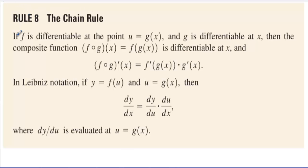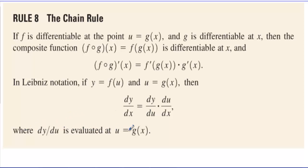Rule 8, the chain rule: If f is differentiable at the point u equals g of x, and g is differentiable at x, then the composite function f of g of x is differentiable at x. The derivative of the composite is found by taking the derivative of the outside function first, leaving the inside unchanged, then multiplying by the derivative of the inside. In Leibniz notation: dy/dx equals dy/du times du/dx, where dy/du is evaluated at u equals g of x.